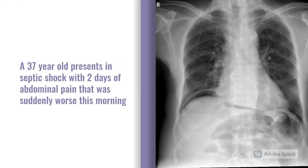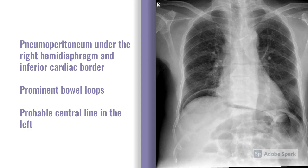Next: a 37-year-old presenting in septic shock with a two-day history of abdominal pain that was suddenly worse this morning. Rotation appears good, inspiration is adequate, and exposure is good. Breathing-wise, the lungs look relatively clear with a few slightly prominent hilar aspects — possibly lymph nodes. Circulation-wise, the heart looks okay, though the right border isn't as crisp. On D, the obvious abnormality is air under the right hemi-diaphragm, and air also tracks to the inferior aspect of the cardiac border. Below the diaphragm, there are also prominent bowel loops suggesting a small degree of obstruction. There is also a line entering from the left side of the neck sitting just above the carina — probably a central line. The diagnosis is a likely perforated bowel requiring urgent surgical input.